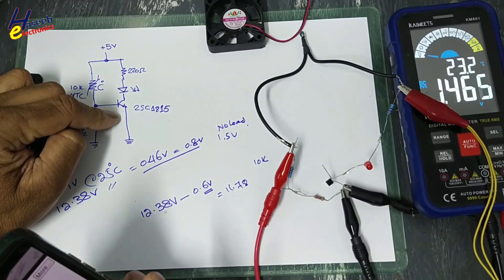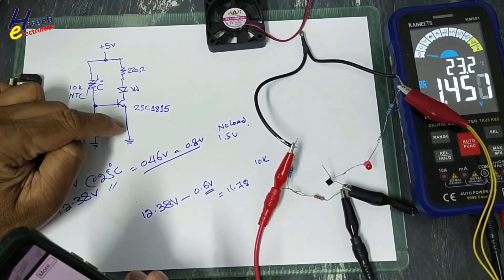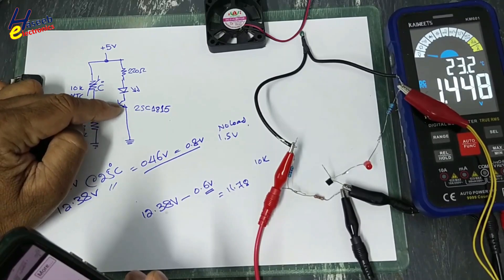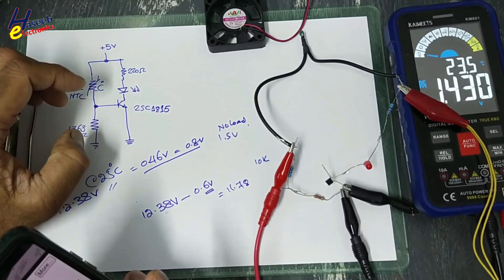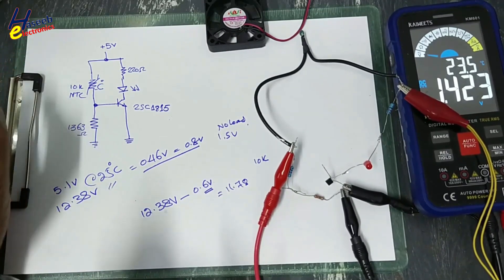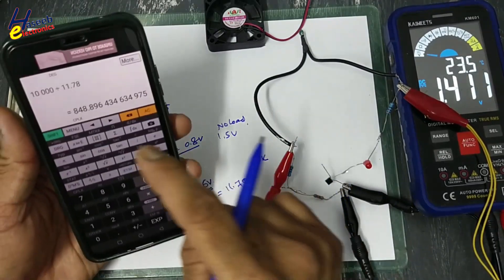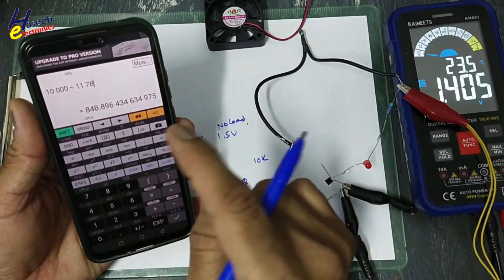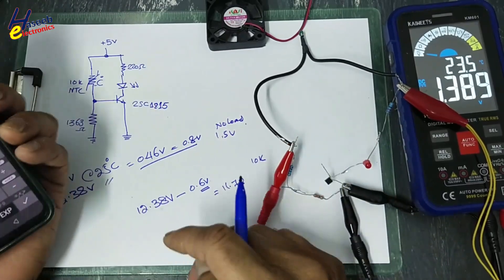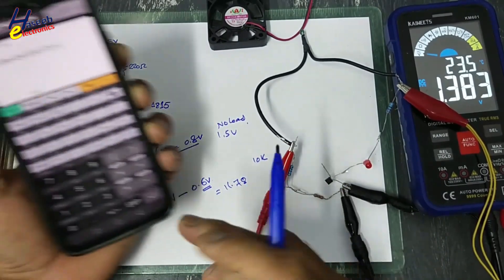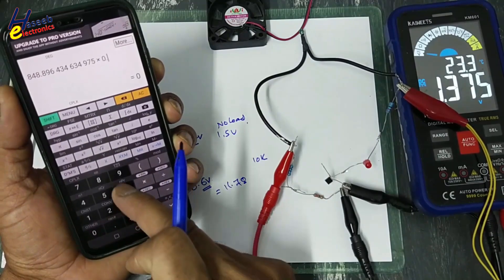I am using the simplest technique — taking the ratio of this resistor. There is a second method where you select the base current when determining the exact collector current, but this time I am just making an approximation to understand the function of this circuit. 848 ohms per volt multiplied by 0.6V gives the required resistor.